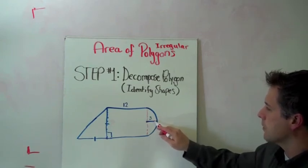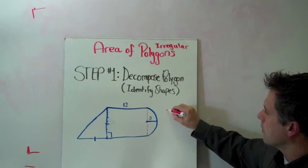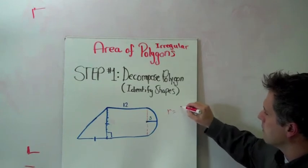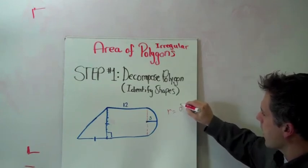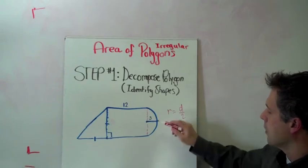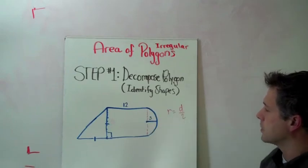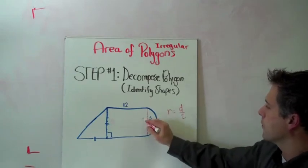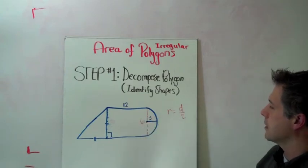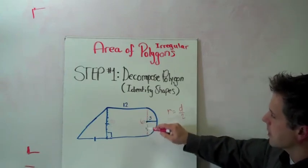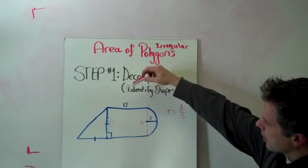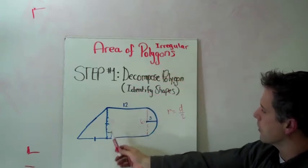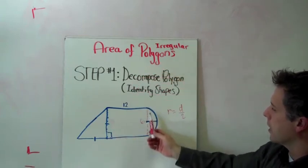If the radius is 3, we know that the radius is equal to half the diameter. Or in other words the diameter is twice the radius. So guess what? That means that the diameter is 6. Therefore we have a rectangle here with the base of 12 and the height of 6.